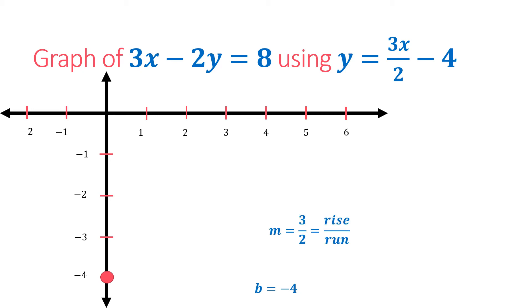We have a slope of 3 halves, which is the numerical coefficient of x. Slope means rise over run. So we have 3 over 2. We have this movement: 1, 2, 3. That is what we call the rise.